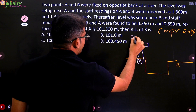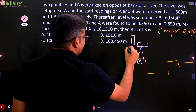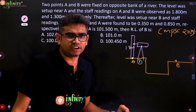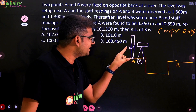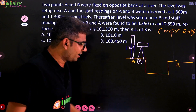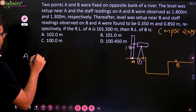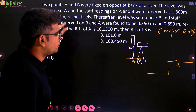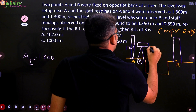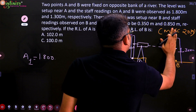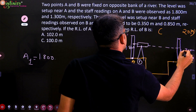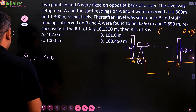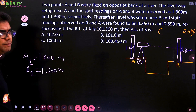From instrument position one, the staff reading on A was 1.800 meters — so A1 equals 1.800. The staff reading on B from instrument position one was 1.300 meters — so B1 equals 1.300 meters.